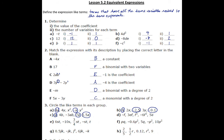Moving right along to part D: we have a negative F, which is not a like term with anything else. We have a 3EF, which is not a like term with anything else — there are no other terms that have both E and F. It's actually the F squared and the negative 6F squared that are like terms, because they both contain F raised to the power of 2.